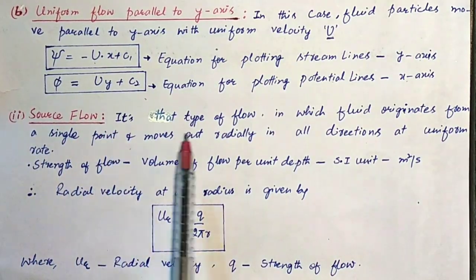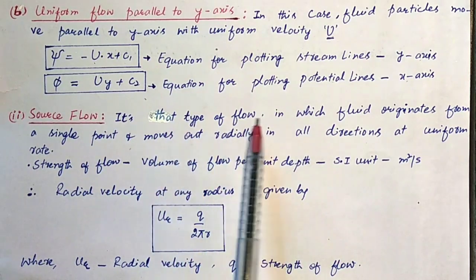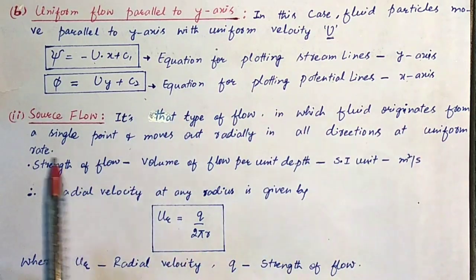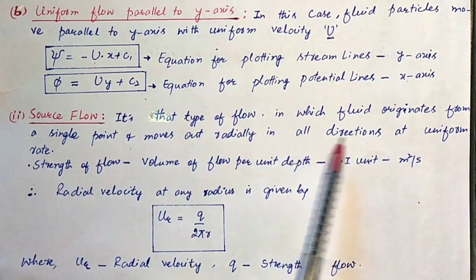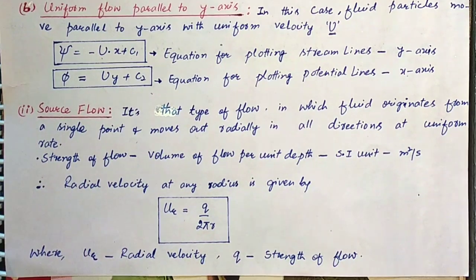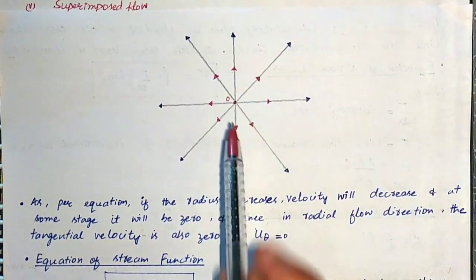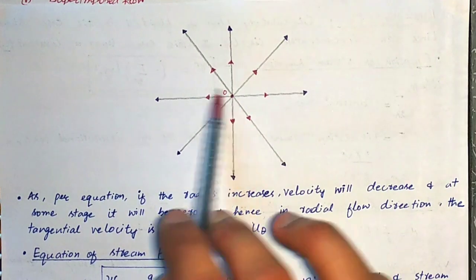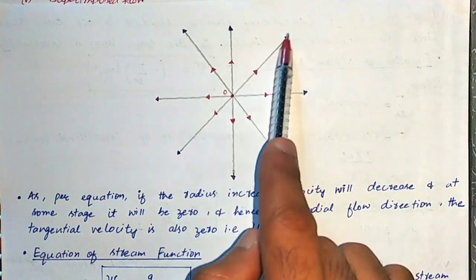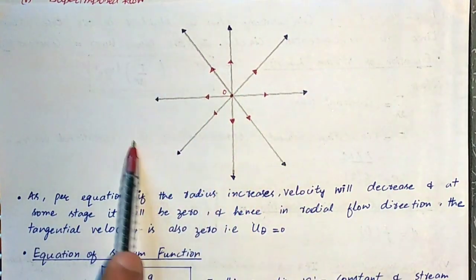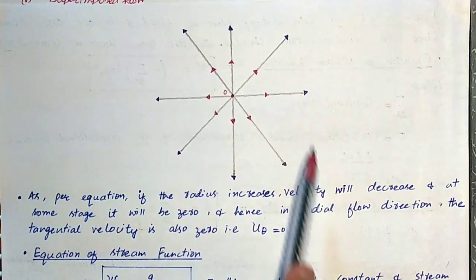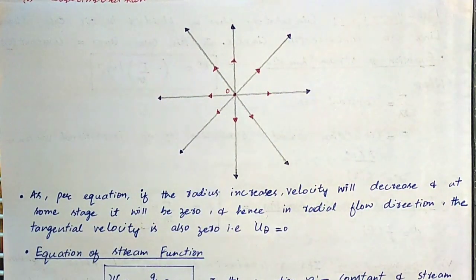The next case is source flow. It is that type of flow in which fluid originates from a single point and moves outward radially in all directions at a uniform rate. Fluid originates from a common point and moves in all outward directions — as you can see in the diagram, the central point is where the fluid originates and flows radially outwards. This type of flow is known as source flow.